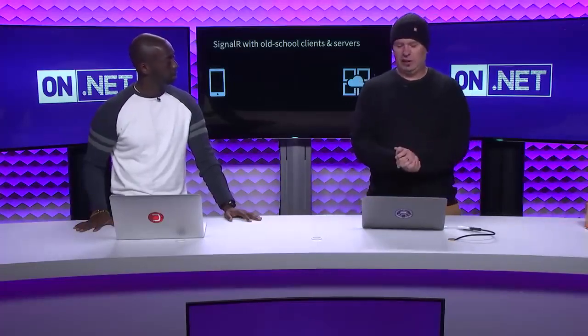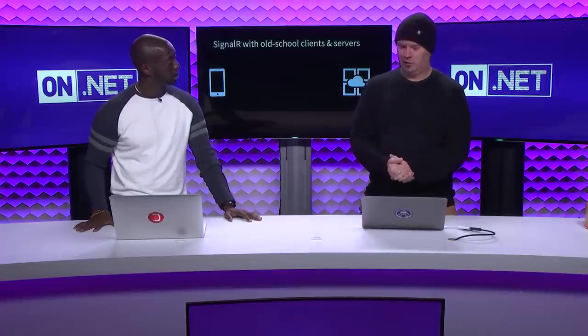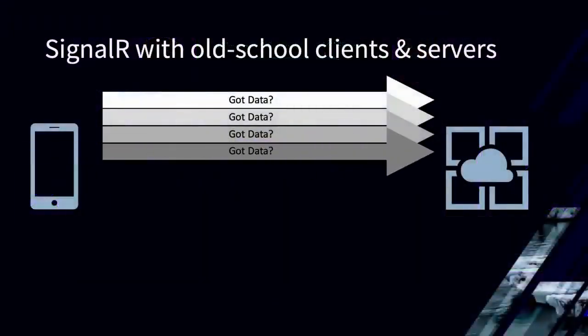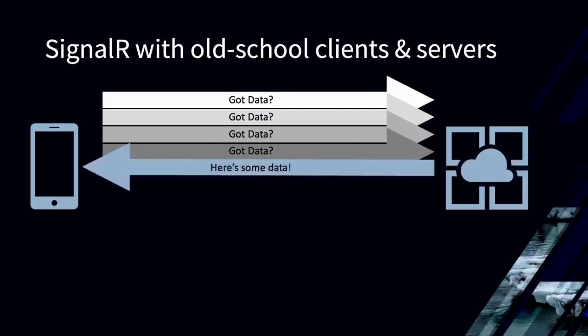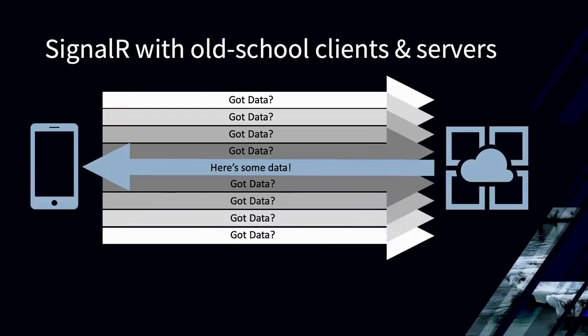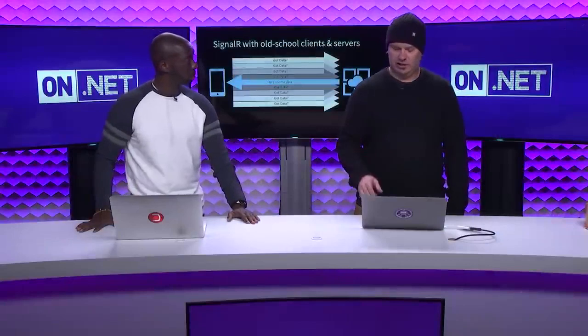The nice thing about SignalR is it's an abstraction. We knew that WebSockets wasn't going to be the last end-all, be-all thing for real-time HTTP — there's probably going to be something that comes after that. So we write an abstraction. With old-school clients and servers that don't support WebSockets, it works like this: you have a long polling scene where the client says 'do you have data?' repeatedly, and finally the server says 'yep, I've got some data,' and then we start polling again.